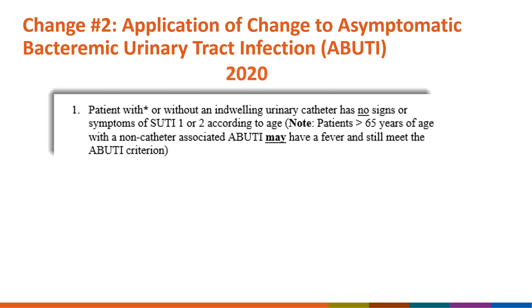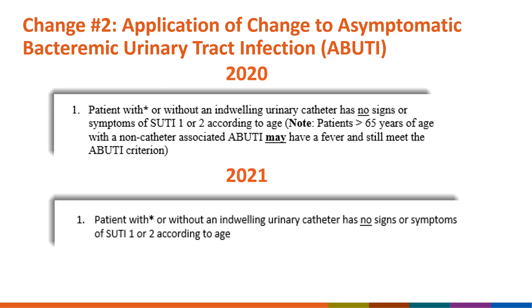Regarding the application of the change to ABUTI: in 2020, patients with or without an indwelling urinary catheter who had no signs or symptoms of SUTI 1 or 2 according to age — including patients greater than 65 years of age with a non-catheter associated ABUTI — may still have had a fever and met the ABUTI criterion. In 2021, patients with or without an indwelling urinary catheter must have no signs or symptoms of SUTI 1 or 2 according to age for the ABUTI criterion to be met.